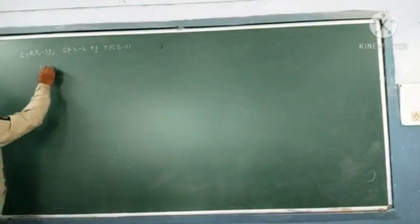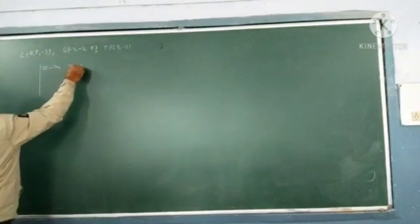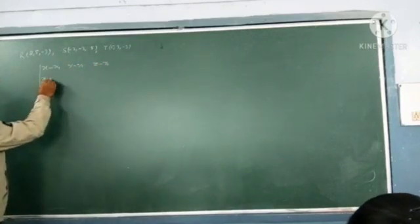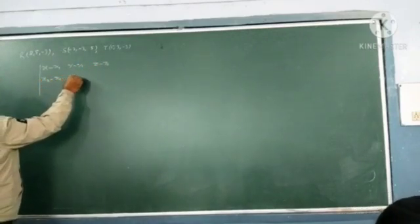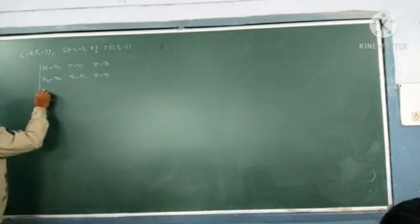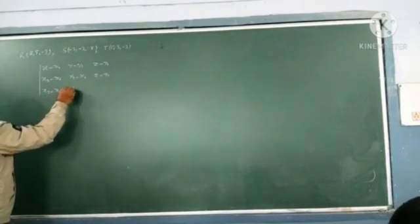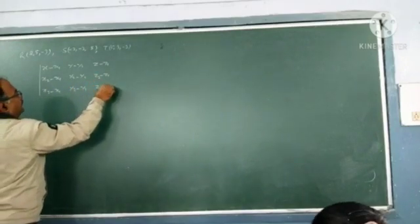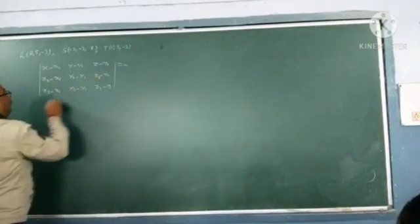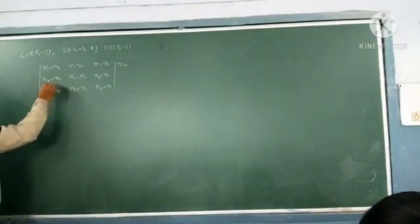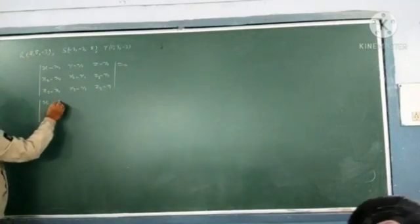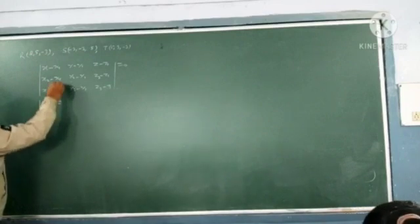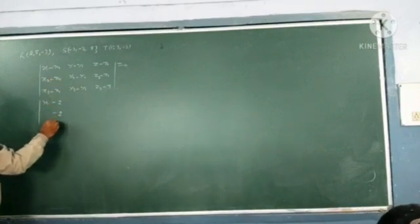The formula is x minus x1, y minus y1, z minus z1, x2 minus x1, y2 minus y1, z2 minus z1 equal to zero. Now x as it is, x1, x2, here again it is minus 2 because x1 is minus 2.